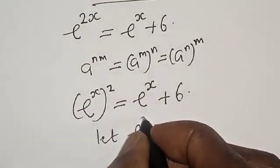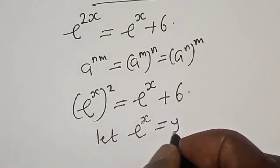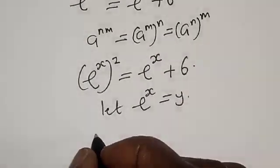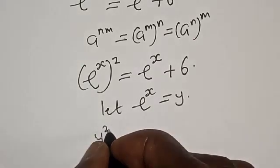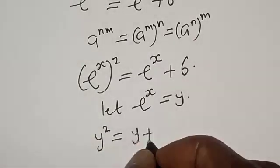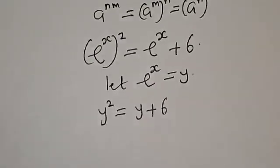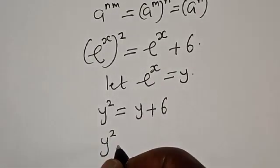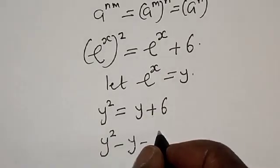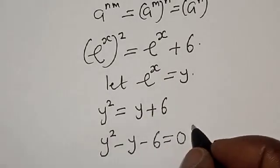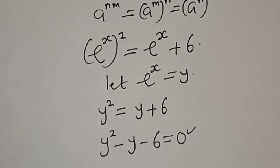Let e raised to the power s equal y. Then we have y squared is equal to y plus 6, which gives us y squared minus y minus 6 is equal to 0. This is a quadratic equation.